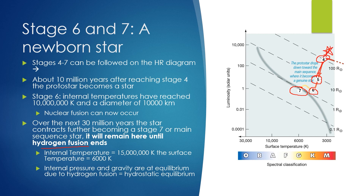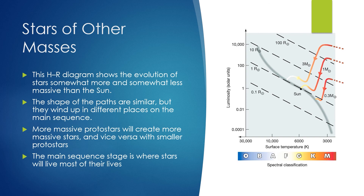For a sun-like star, the internal temperature is 15 million K with a surface temperature of 6,000 K. If a protostar started with more mass, it would have a much higher surface temperature and internal temperature. Stars of other masses will also be shown on the HR diagram as they evolve — the shapes of the paths are similar, but they wind up in different places on the main sequence. More massive protostars will create more massive stars, and vice versa with smaller stars. The main sequence stage is where stars will live most of their lives, but where they end up on it will determine how long that life actually is.